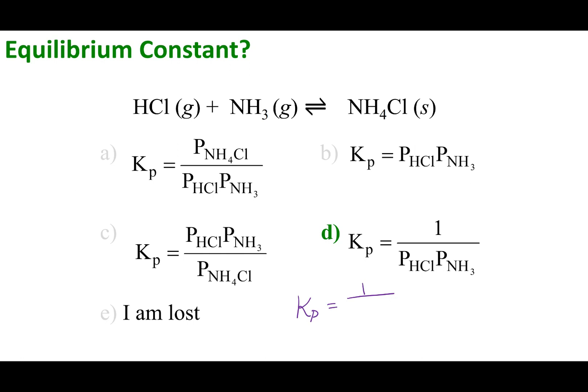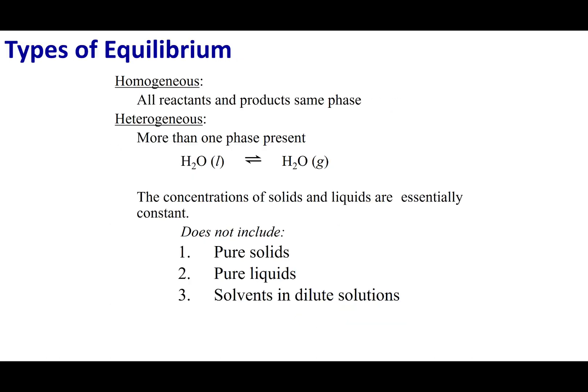So products over reactants raised to their stoichiometric coefficients. And in this case, my reactants are the only things that are not solids or liquids, and they're both to the first power. And so that is the crux of 6.5.